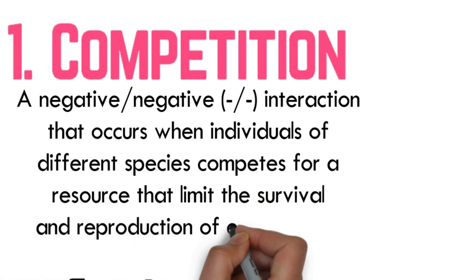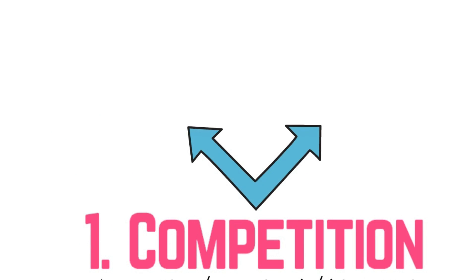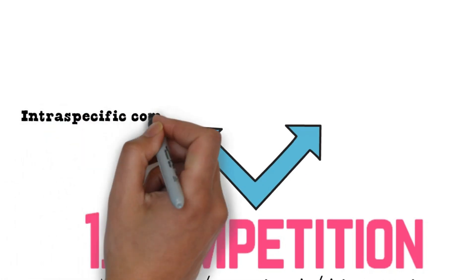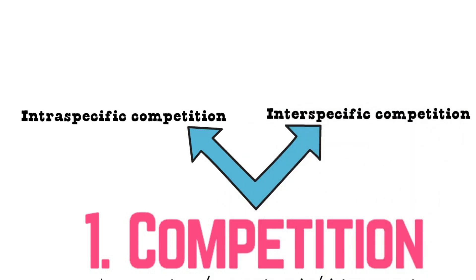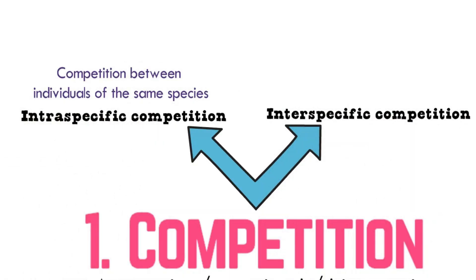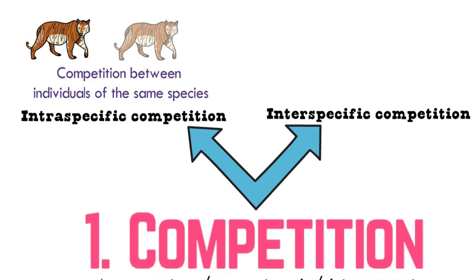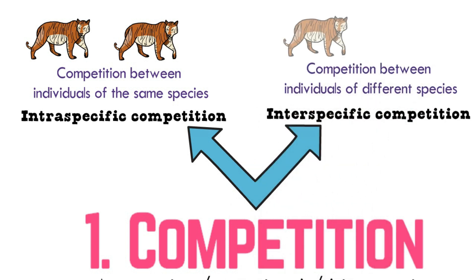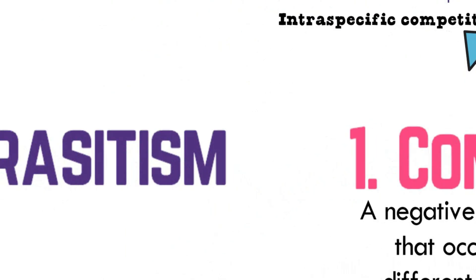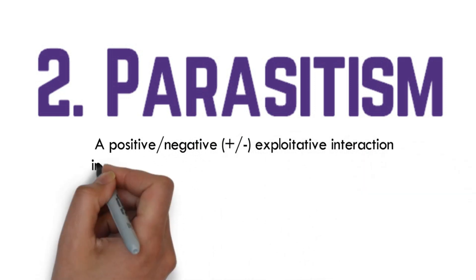Competition can be divided into two types: the first is intraspecific competition and the second is interspecific competition. Intraspecific competition is competition between individuals of the same species, meanwhile interspecific competition is competition between individuals of different species.